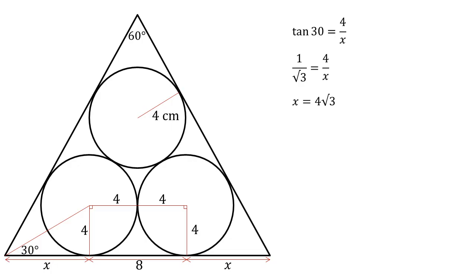We can see that the bottom edge of our triangle is eight and two x's. So a side length must be eight plus two lots of four root three, which we can factorize to make eight lots of one plus root three.